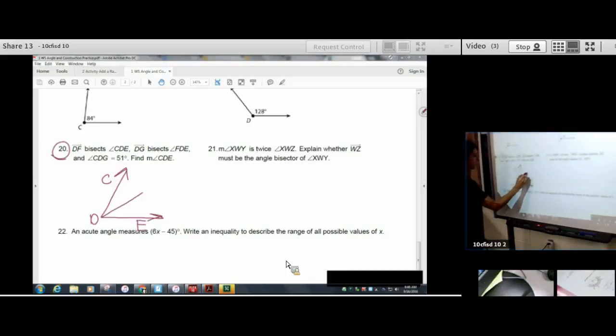Where DF is a bisector. So I'm going to do an arc and an arc. It's DF bisects CDE. So I've done that. Check.